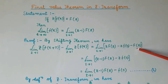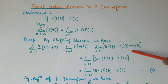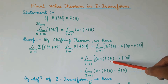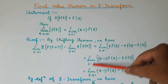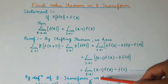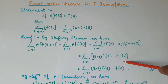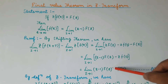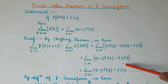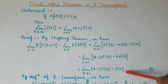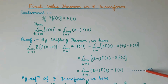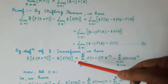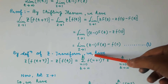Now we can simplify this equation, and it can be written as (z minus 1) times F(z) minus z·f(0), with the limit z tends to 1. When we substitute this limit, we get the limit of (z minus 1) times F(z) when z tends to 1, and since z equals 1, this will equal f(0). Let this be equation number 1.